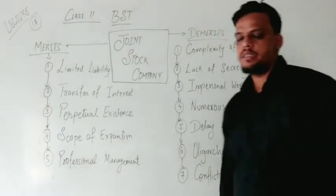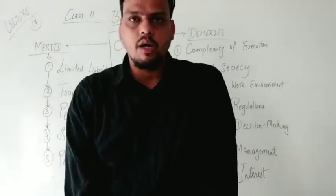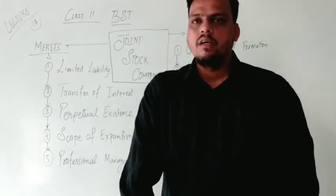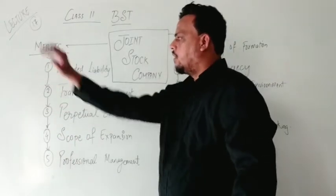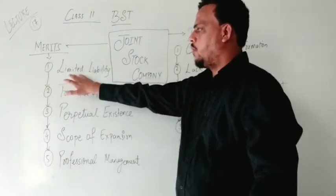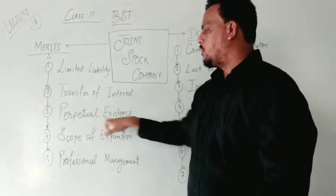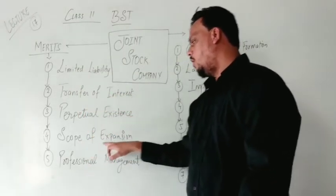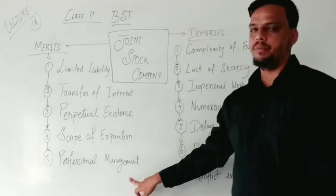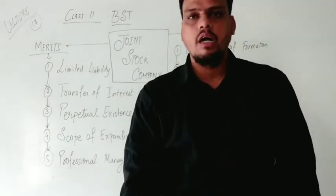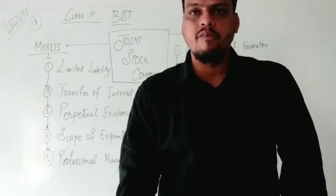Every point is important for understanding the joint stock company. So let's begin with the merits. The 5 points are: limited liability, transfer of interest, perpetual existence, scope of expansion, and professional management. All 5 points are related to joint stock companies and are very important.